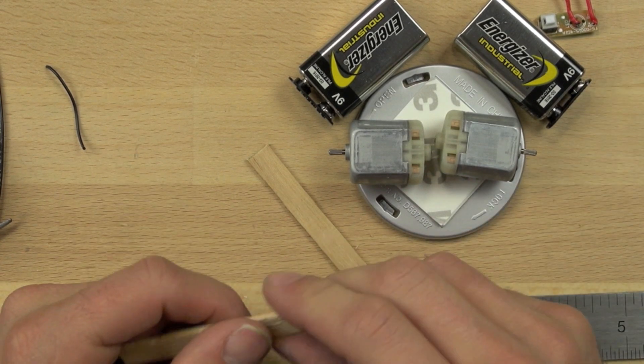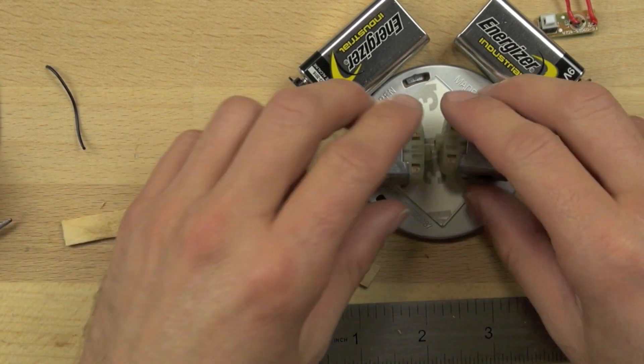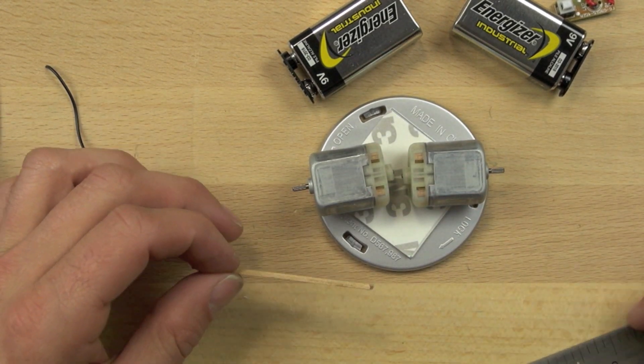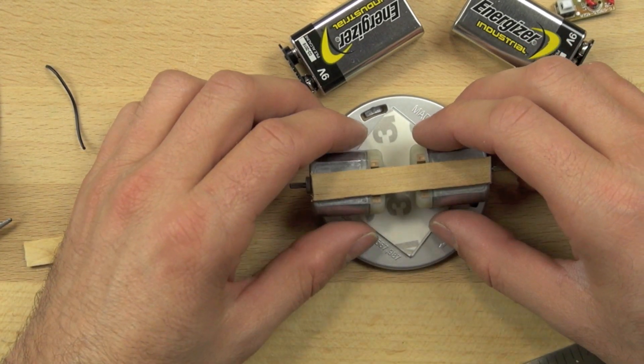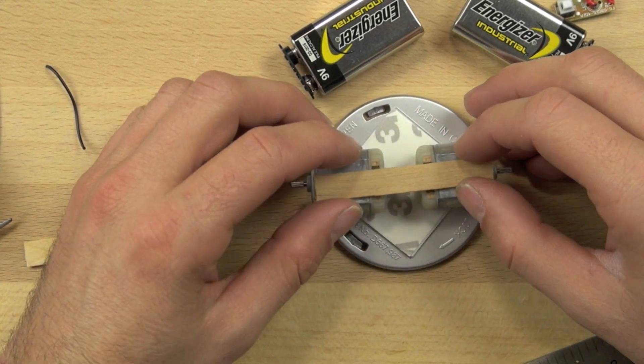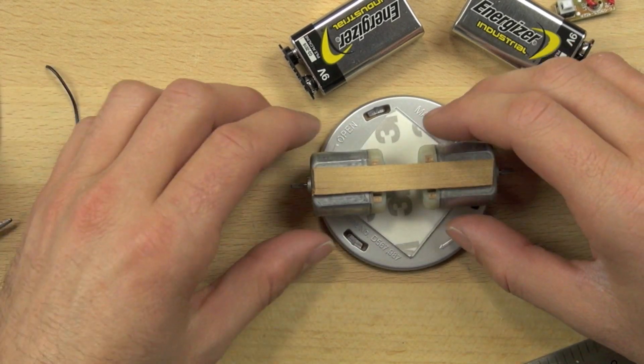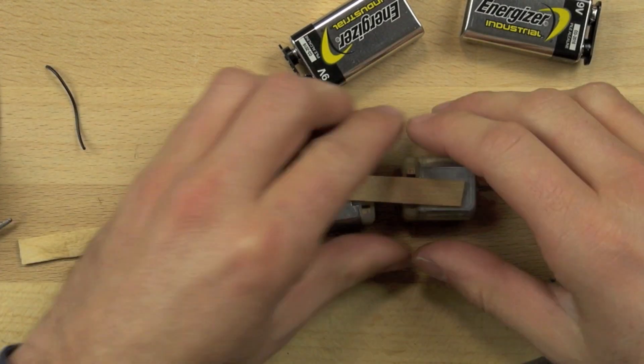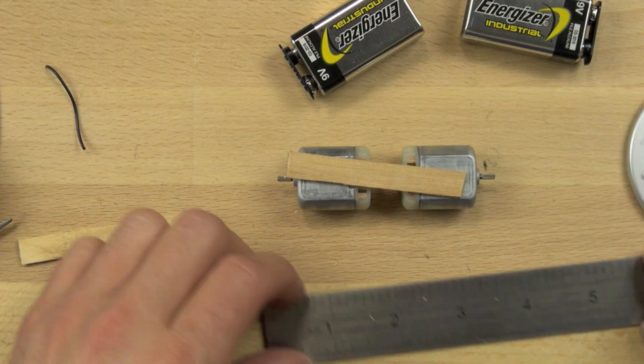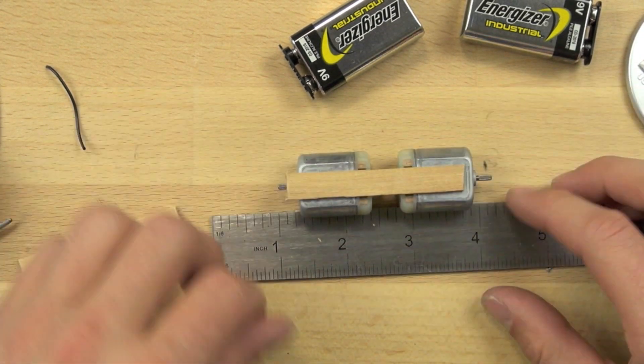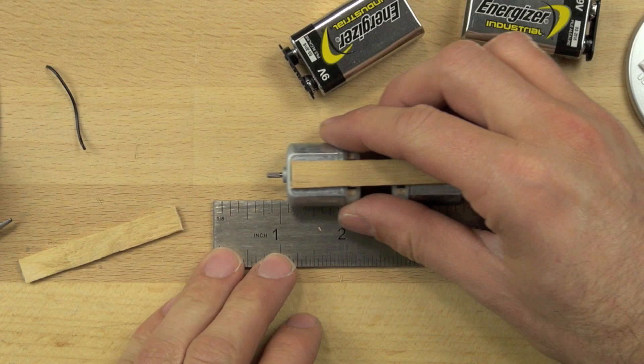We're just going to trim the edge of that popsicle stick off there, make sure it's nice and clean, and we want to make sure that our motors are lined up perfectly straight. We're just positioning that popsicle stick on top to make sure everything is the way it needs to be. Now it's important that the popsicle stick does not stick out past the edge of the motor. If it does, you're going to have some trouble getting the wheel to turn.